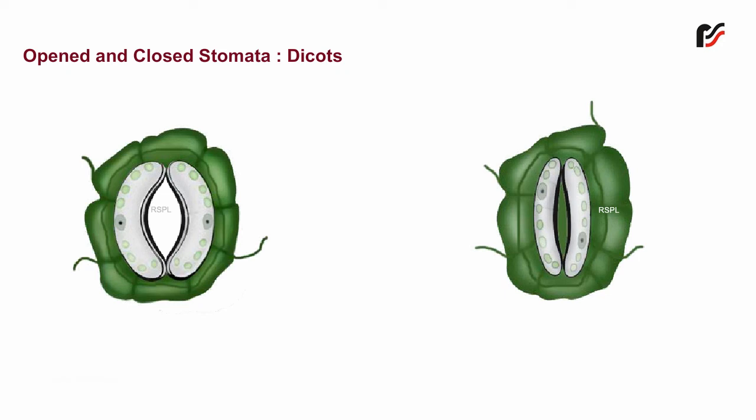The guard cells control the opening and closing of stomata by changes in their turgidity. The walls of guard cells are differentially thickened and elastic. That is, they are thickened on the inner side and thinner and more elastic on the outer side.